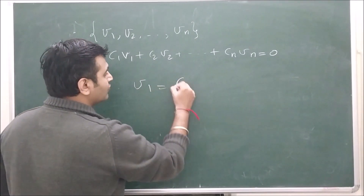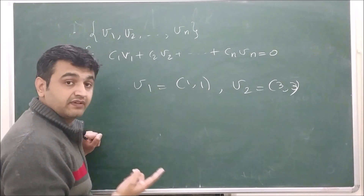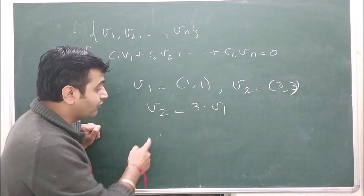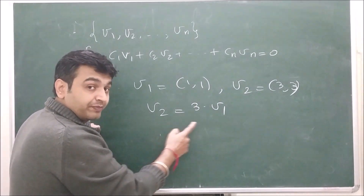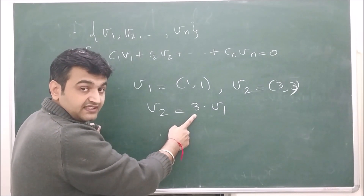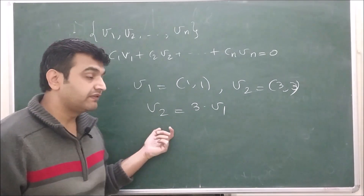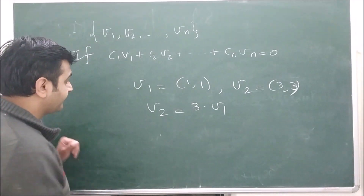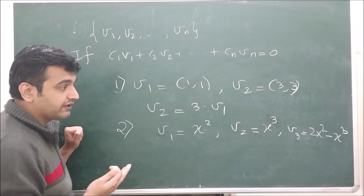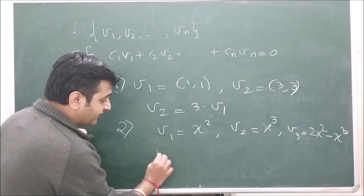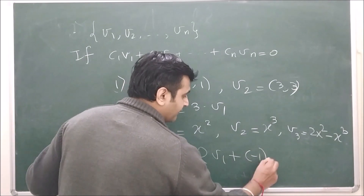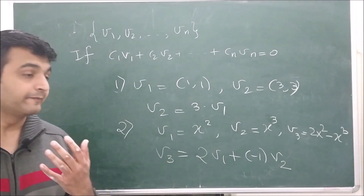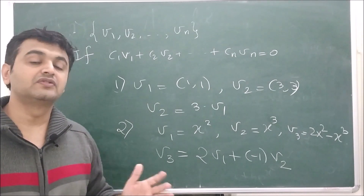For example, if v1 = (1,1) and v2 = (3,3), then v2 is simply 3 times v1, so v1 and v2 are linearly dependent. Another example: if v1 = x², v2 = x³, and v3 = 2x² − x³, then v3 = 2·v1 + (−1)·v2, so these three vectors are also linearly dependent.